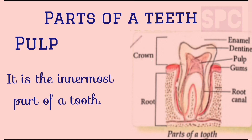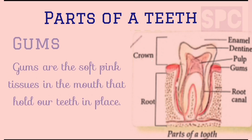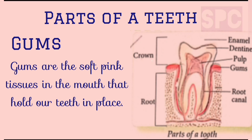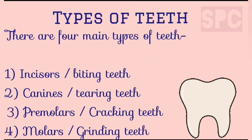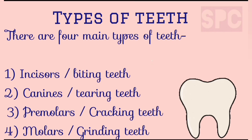Pulp is a soft substance that contains nerves and blood vessels — it is the innermost part of the tooth that fills the empty spaces. Gums are the soft pink tissues in the mouth that hold our teeth in place. The root is the bottommost part of the tooth, present inside the gums, and holds the tooth in its position.